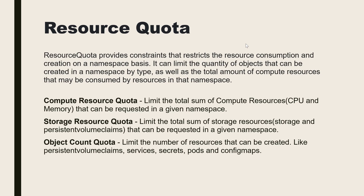There are three ways the resource quota can be defined. One is compute resource quota, where you can define the total CPU and memory which can be used by the pods in a namespace. For storage quota, you can define the total amount of storage and the persistent volume claims that can be created. The third one is the object quota, where you can limit the count of resources that can be created, like services, secrets, and config maps. For example, you can define that only 10 pods can be created in this namespace.